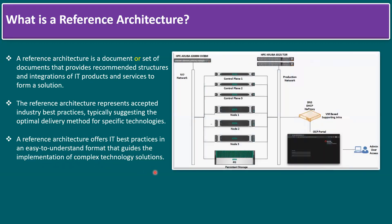Here is another example — the HPE Reference Architecture for Red Hat OpenShift Container Platform. Minimally, we require six compute resources: three master nodes (also called control plane nodes) and three worker nodes. The control plane node is a one-unit server, while worker nodes are two-unit servers. Worker nodes have a higher configuration than master nodes because production applications run on them.